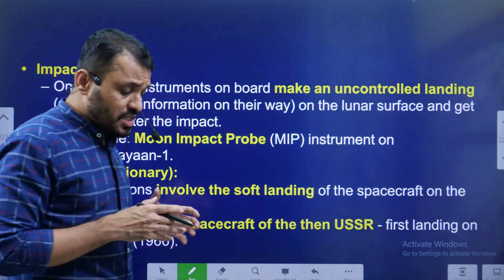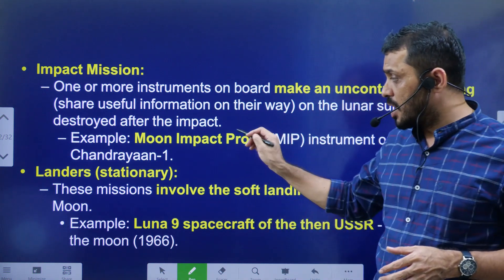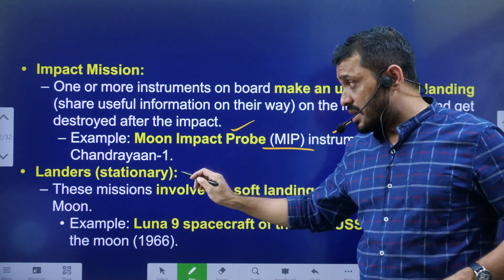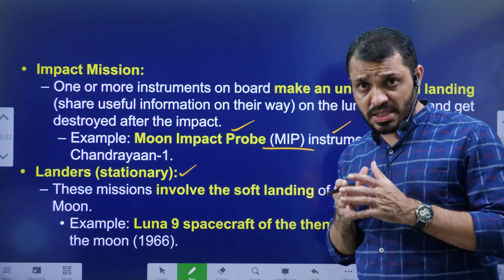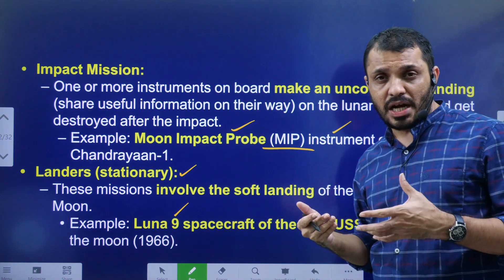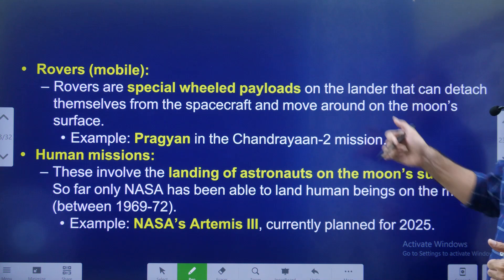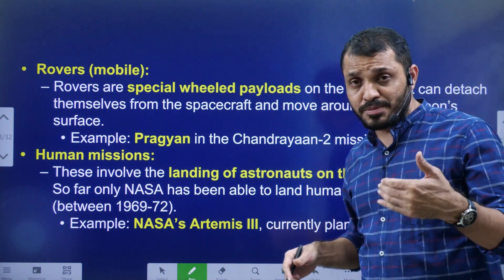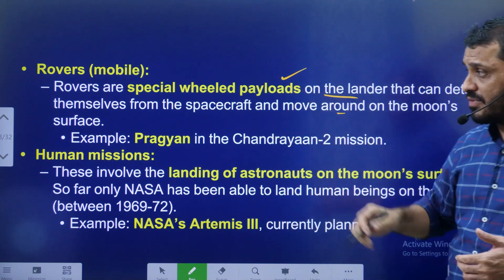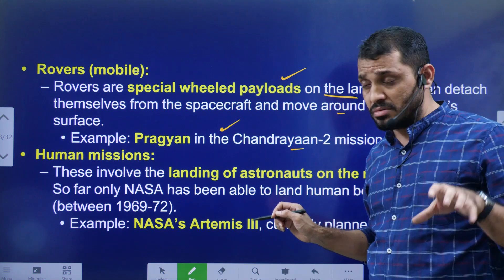Number three: Impact missions — they deliberately make an uncontrollable landing on the moon's surface. Best example is the Moon Impact Probe, launched with Chandrayaan-1. Number four: Landers — successfully landing on the moon. Luna 9 from the USSR achieved the first successful soft landing. Number five: Rovers — not only landing, but the equipment moves on the moon's surface using wheels. Pragyan is our rover; in Chandrayaan-2 it was not successful, but in Chandrayaan-3 it is.